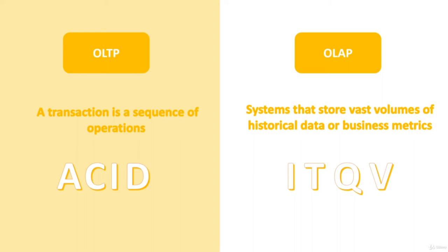OLAP systems are based on four stages. Ingestion: where raw data is obtained to be stored or used; data can come from OLTP systems among other sources. Transformation: the data gets cleaned, removing anything invalid or corrupt, and transformed into more suitable formats to generate metrics. Query: the data is stored in a database used to perform queries. Visualization: the last step creates reports that summarize how the business is performing.